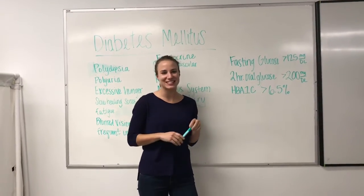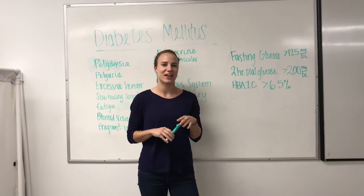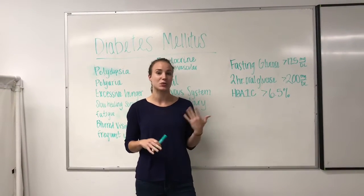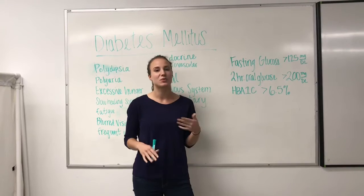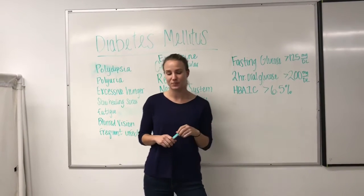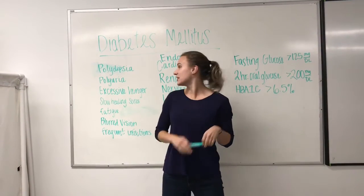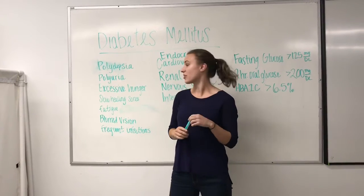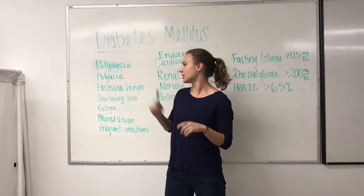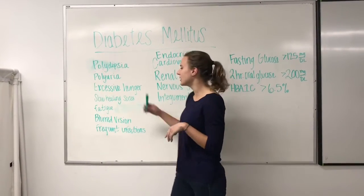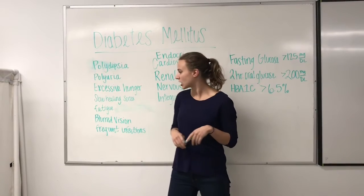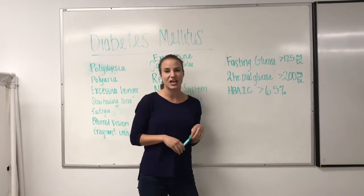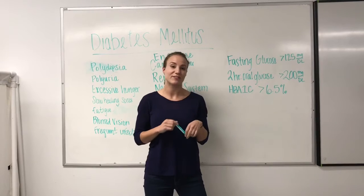Diabetes mellitus is a chronic endocrine disorder that affects the way the body metabolizes glucose or sugar, which is a major source of fuel for the body. Symptoms of diabetes include polydipsia or excessive thirst, polyuria or excessive urination, excessive hunger, slow healing sores, fatigue, blurred vision, and frequent infections.